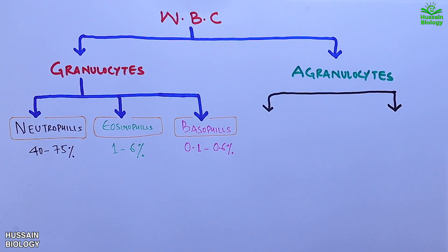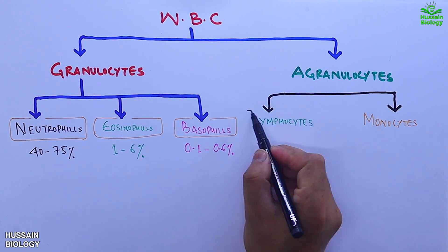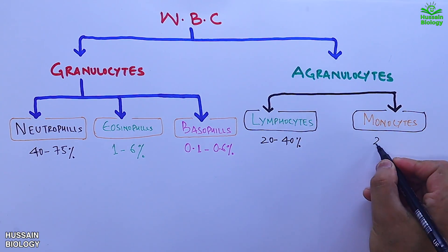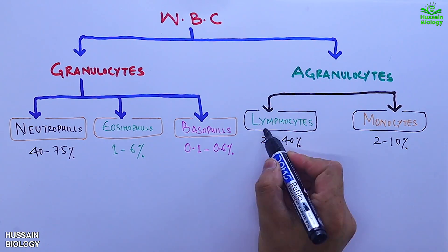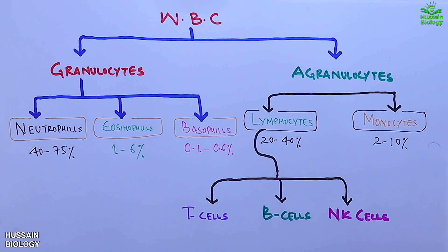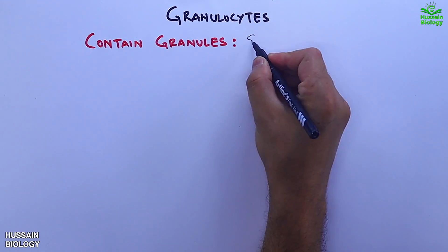Agranulocytes are divided into lymphocytes and monocytes. Lymphocytes comprise 20 to 40 percent and monocytes 2 to 10 percent. Lymphocytes are further divided into T cells, B cells, and NK cells, whereas monocytes differentiate into macrophages and dendritic cells. Now let's discuss the granulocytes first — they contain granules which secrete substances while fighting infections or pathogens.